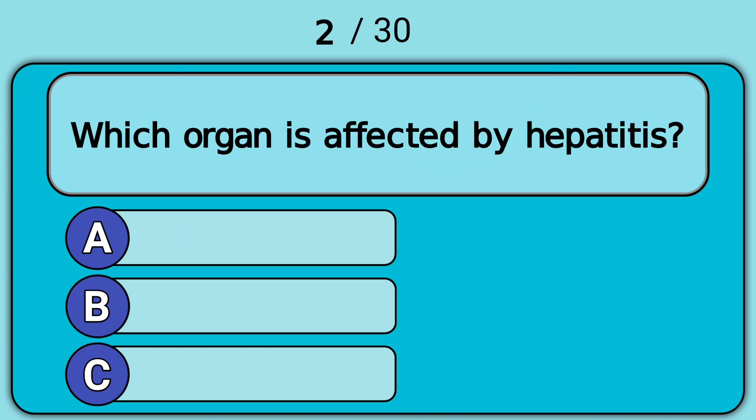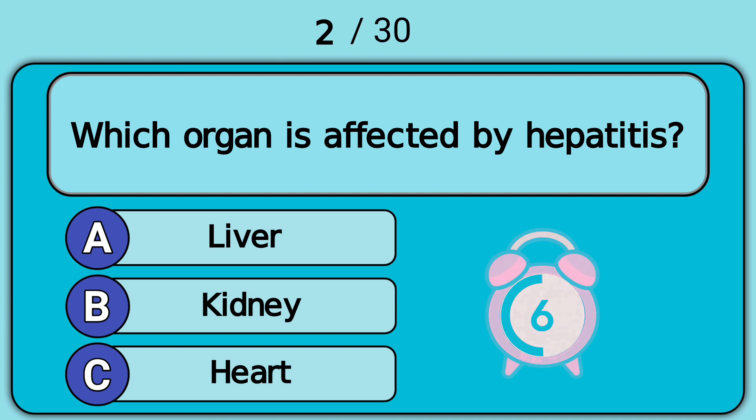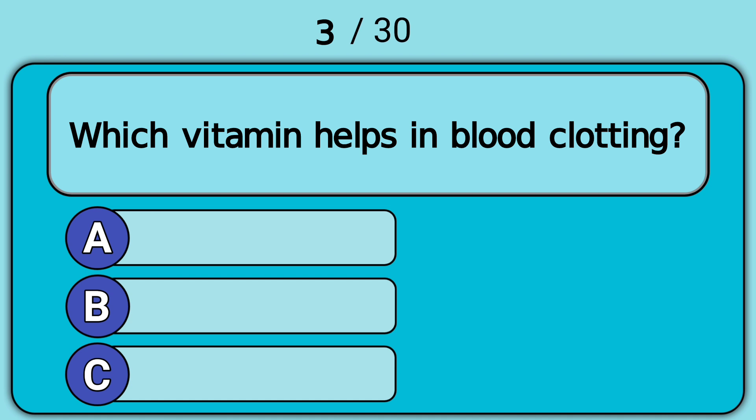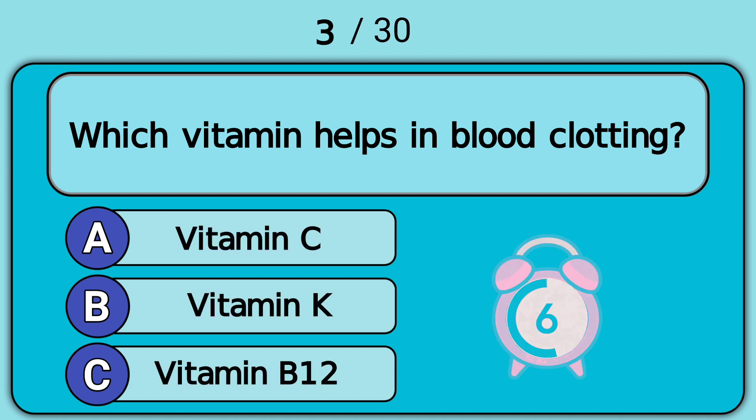Which organ is affected by hepatitis? Answer A. Liver. Which vitamin helps in blood clotting? Answer B. Vitamin K.